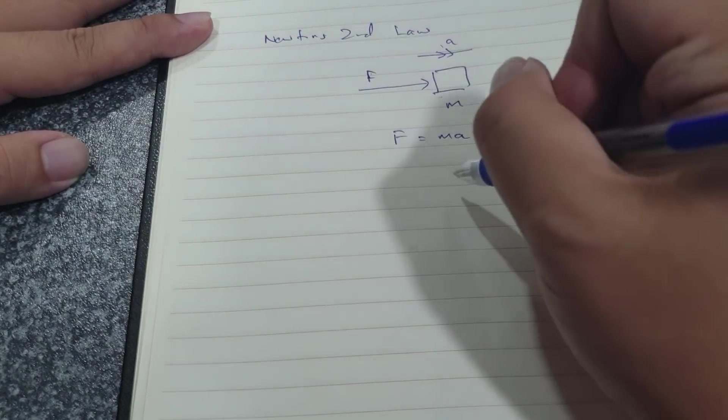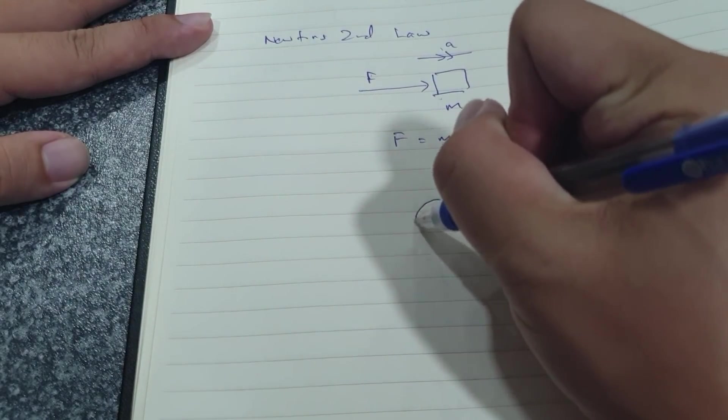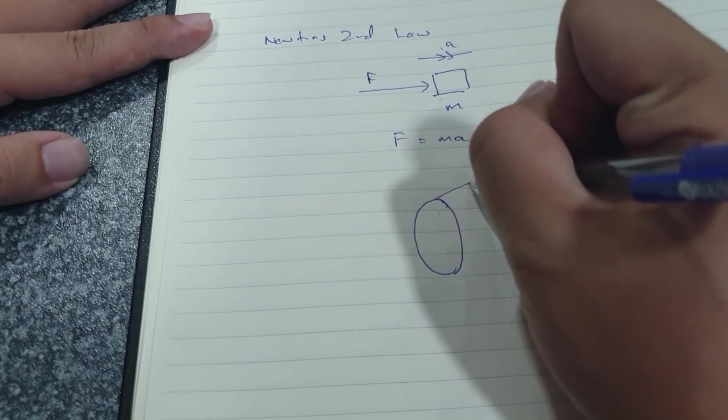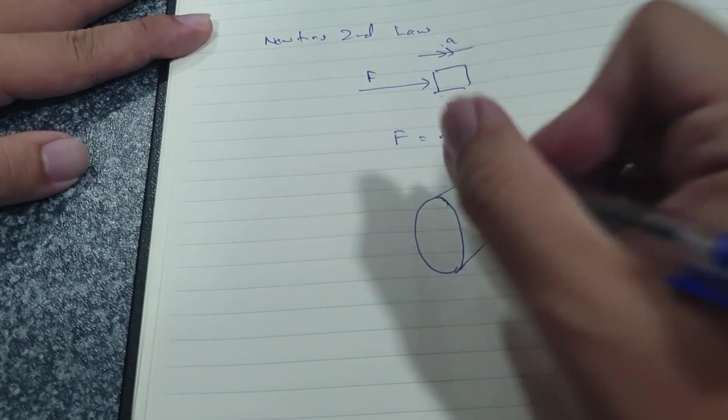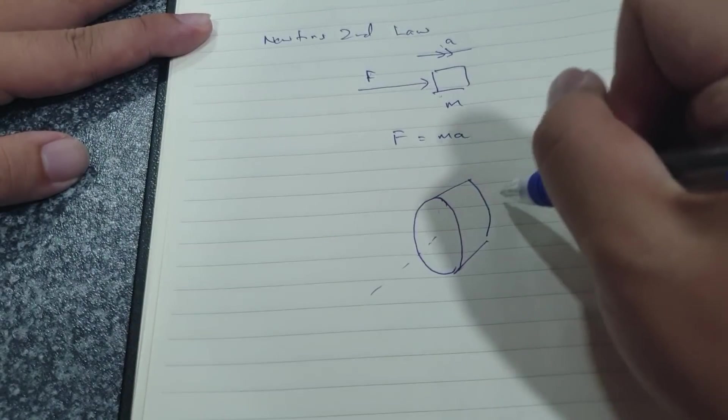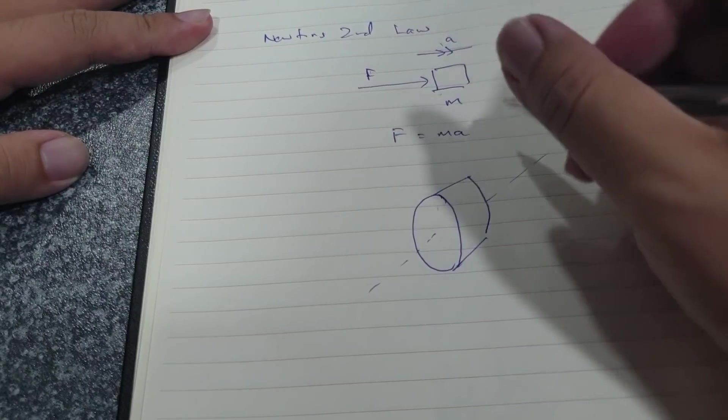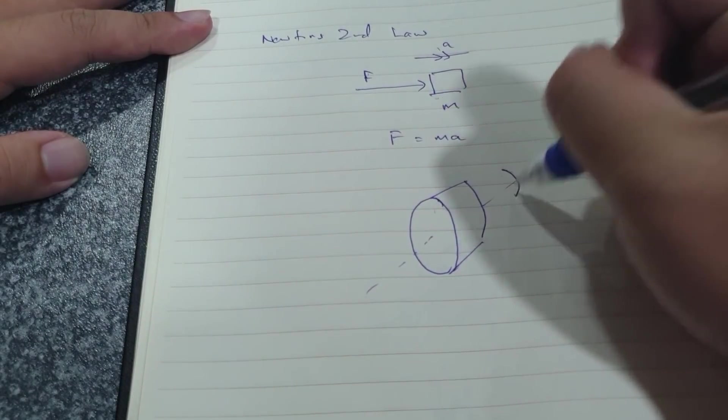Now but how do you apply Newton's second law in a rotational system? So let's say you have a cylinder. You have this cylinder and it is rotating about this axis through its center line.